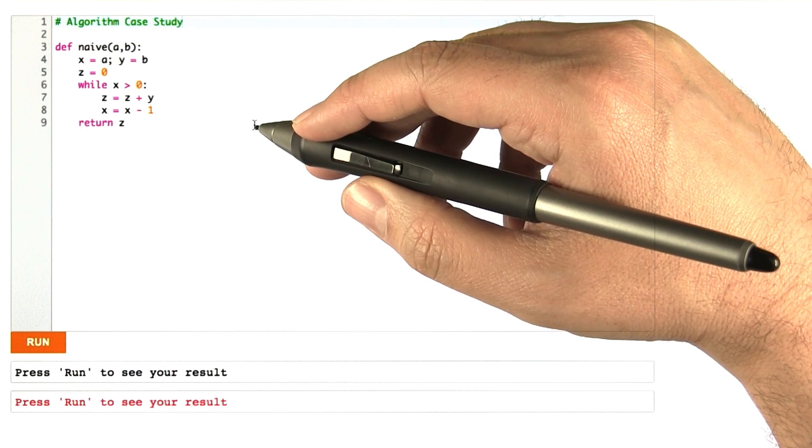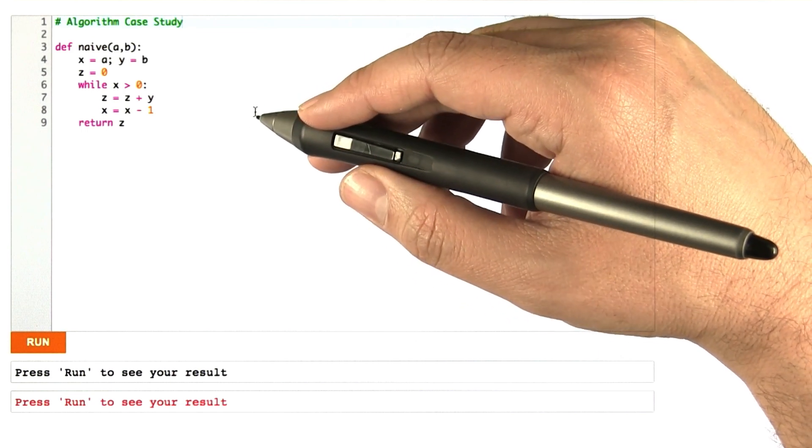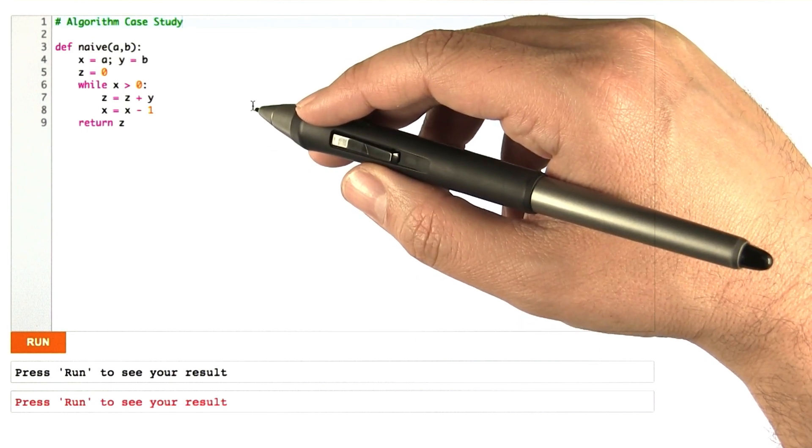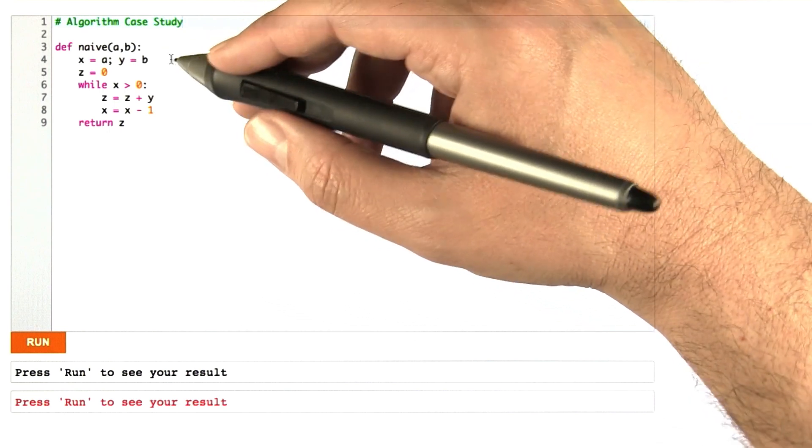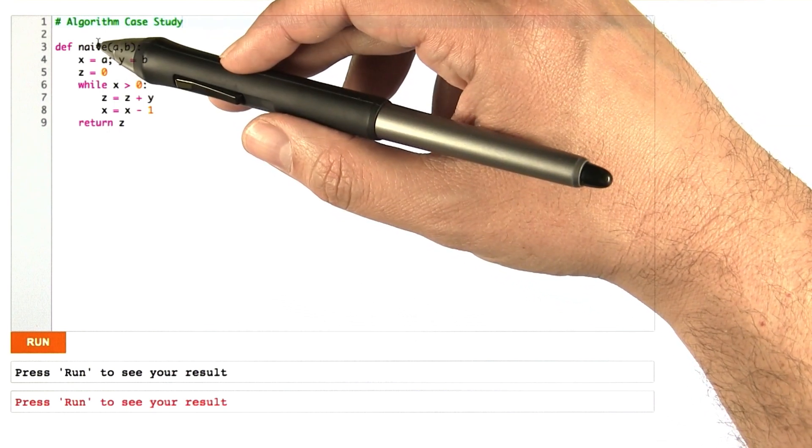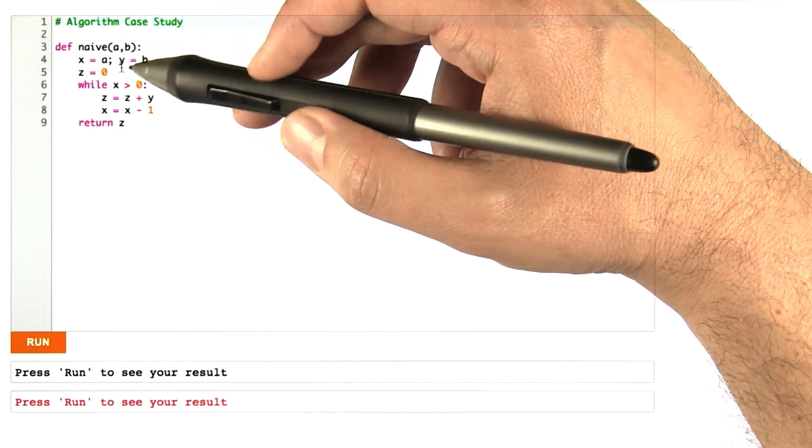So to get you thinking about algorithms and how they work and what makes them correct and how to make them more efficient, let's go through an example together. So here's a little bit of Python code that I wrote. It's a routine called naive because I'm not telling you yet what it actually is doing.